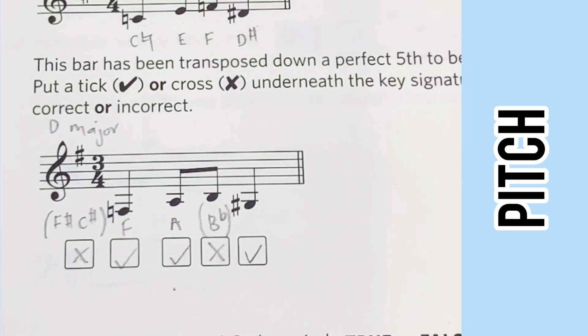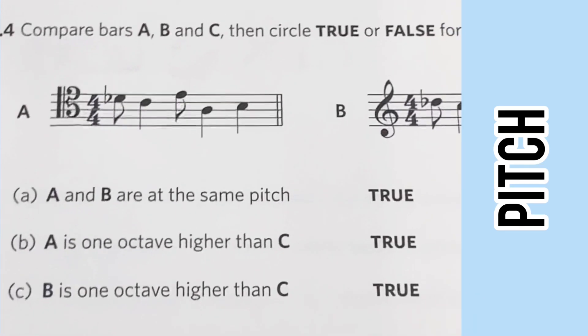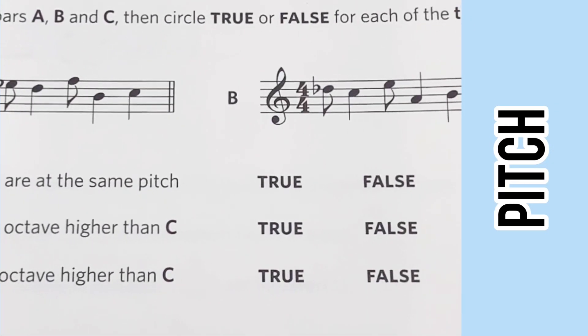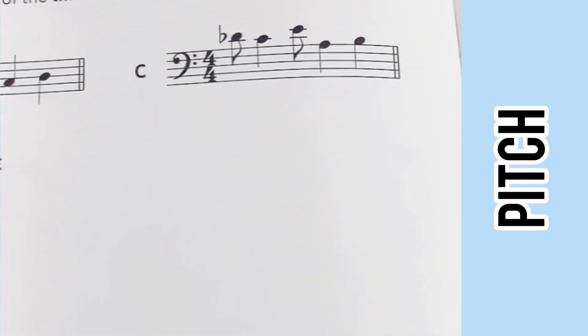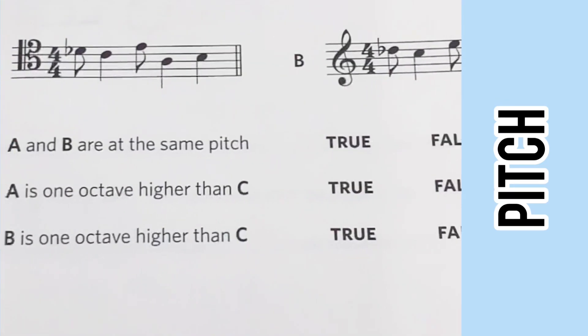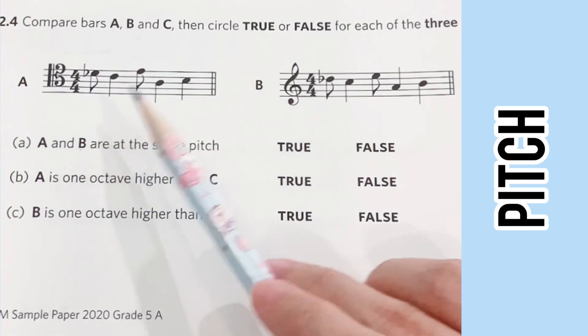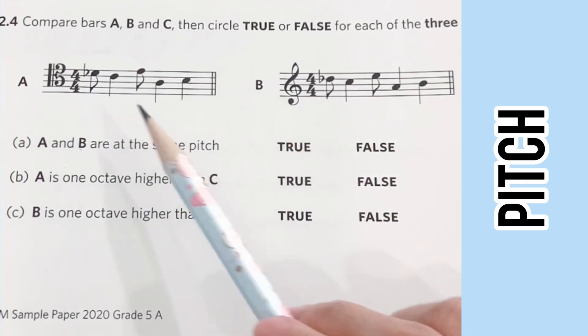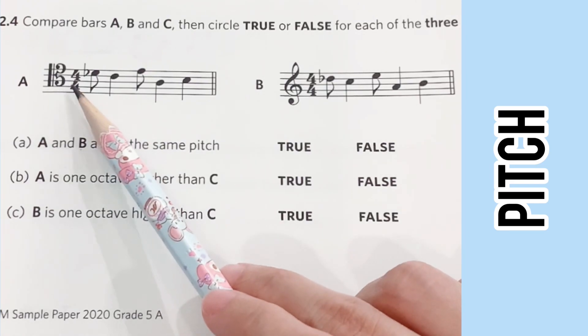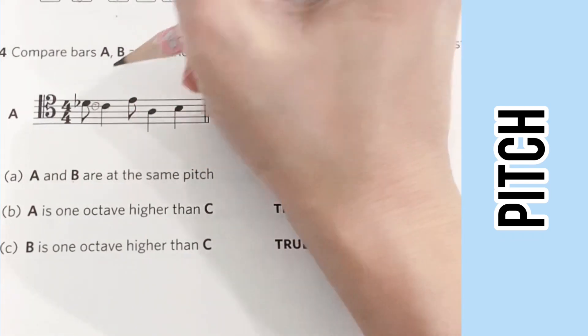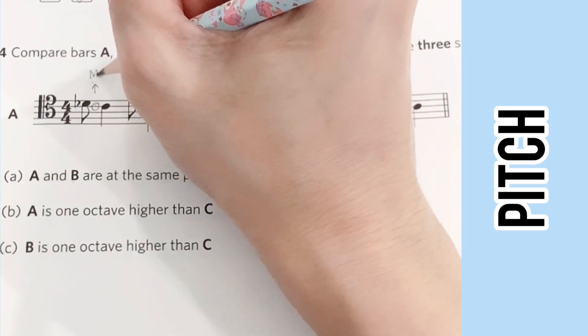Finally, for the last question, we are asked to compare each of the bars and determine if the statements given are true or false. The first statement says that A and B are the same pitch. To determine if they are the same pitch, we need to find out the intervals between these notes and the middle C.